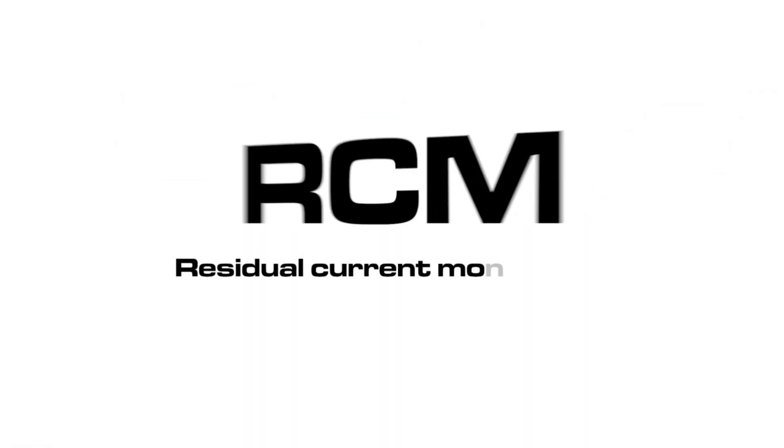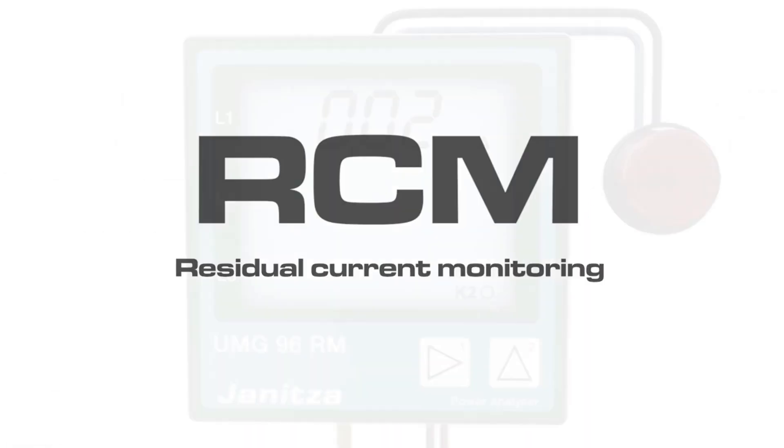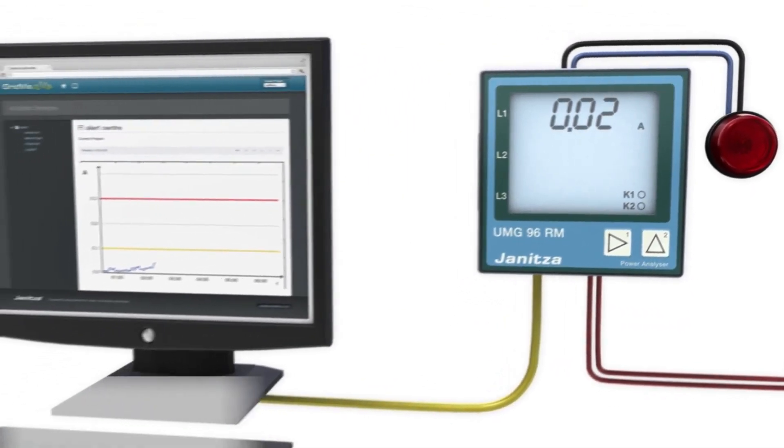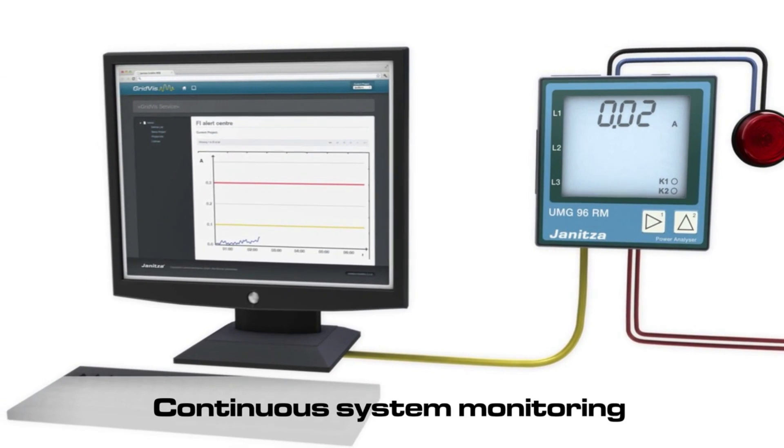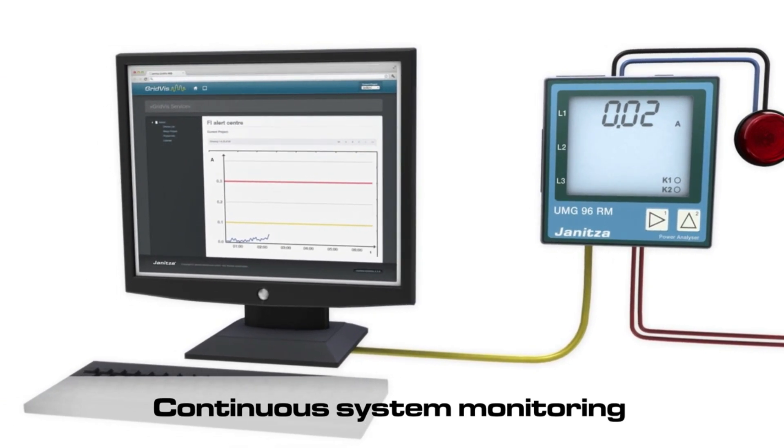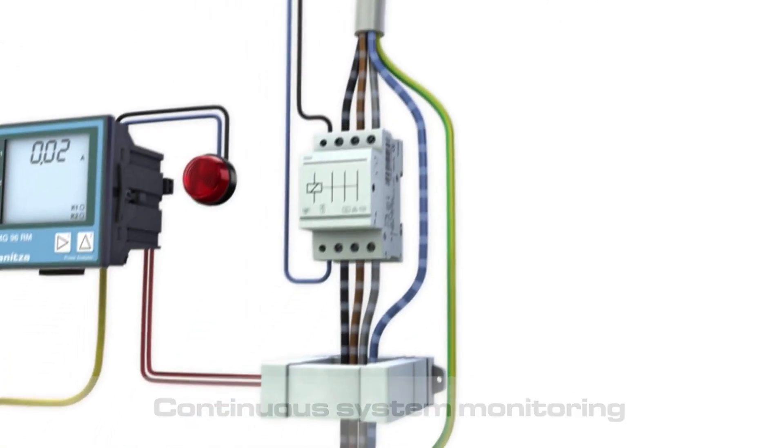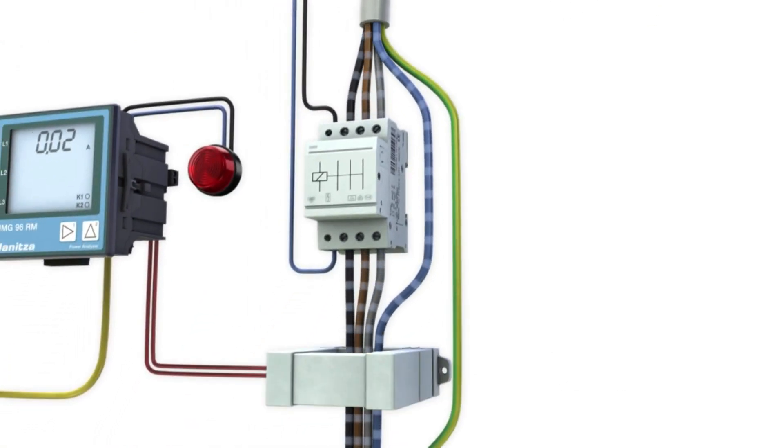An effective RCM residual current monitoring will detect fault currents before disruptions or plant shutdowns occur. In the measurement device UMG96RME, that feature is already integrated.